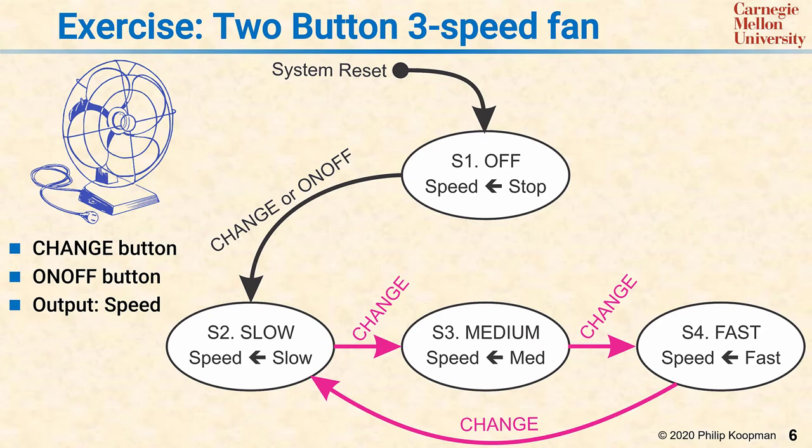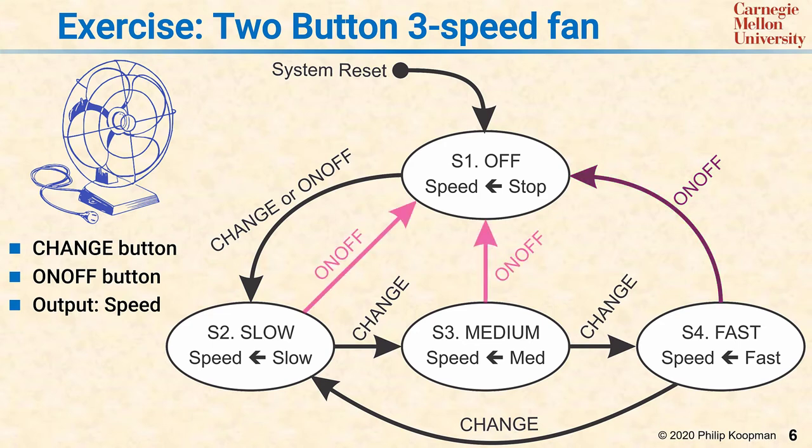Well, how do you get the fan off? That's what the on-off button is for. The on-off button from the fast speed is what you use to turn the fan off. But you don't really want to have to change speed to fast before you can turn it off. So the on-off button also has guard conditions from all the fan motion states back to off.